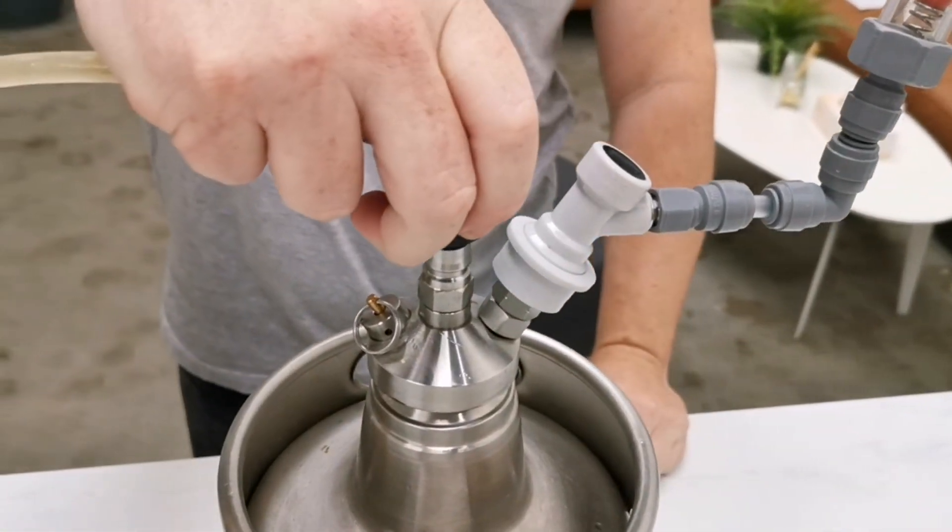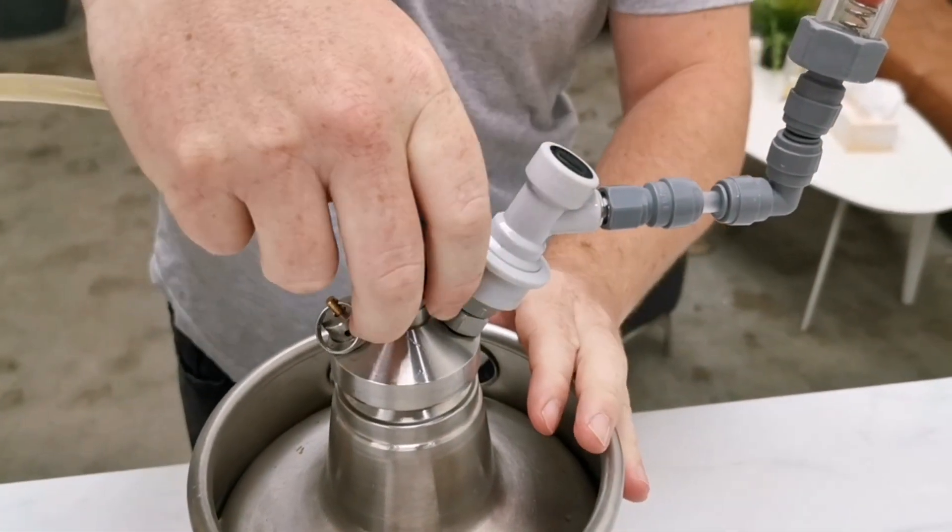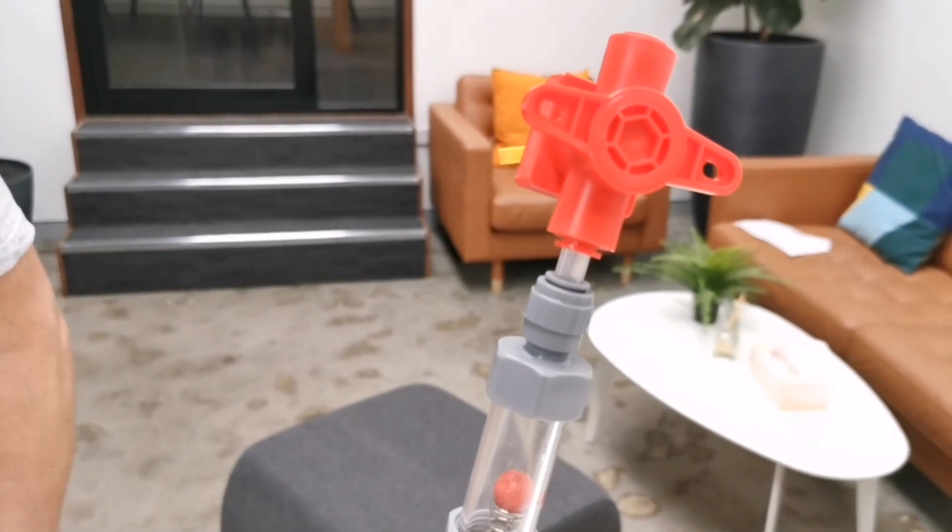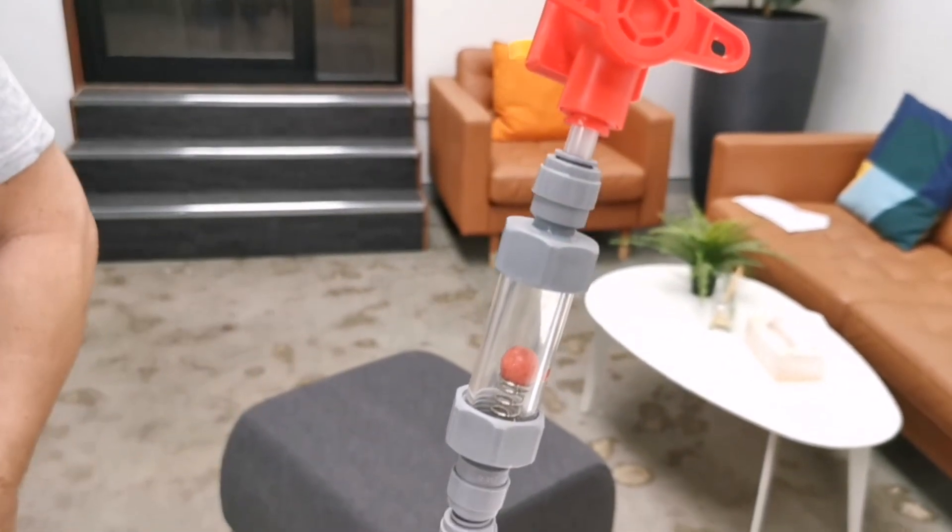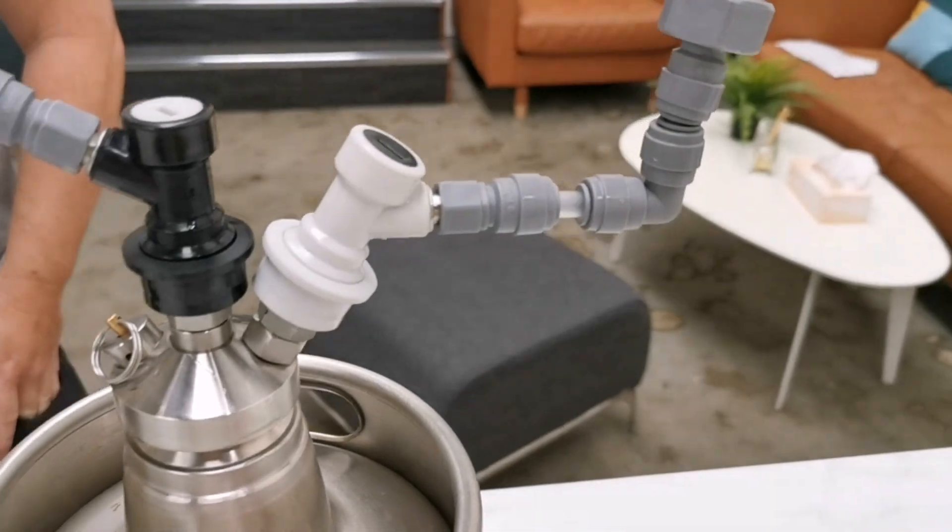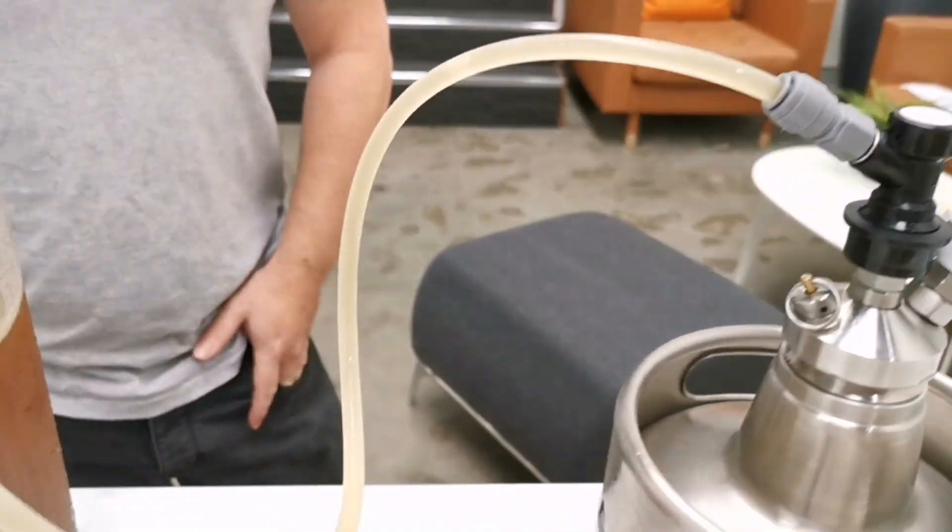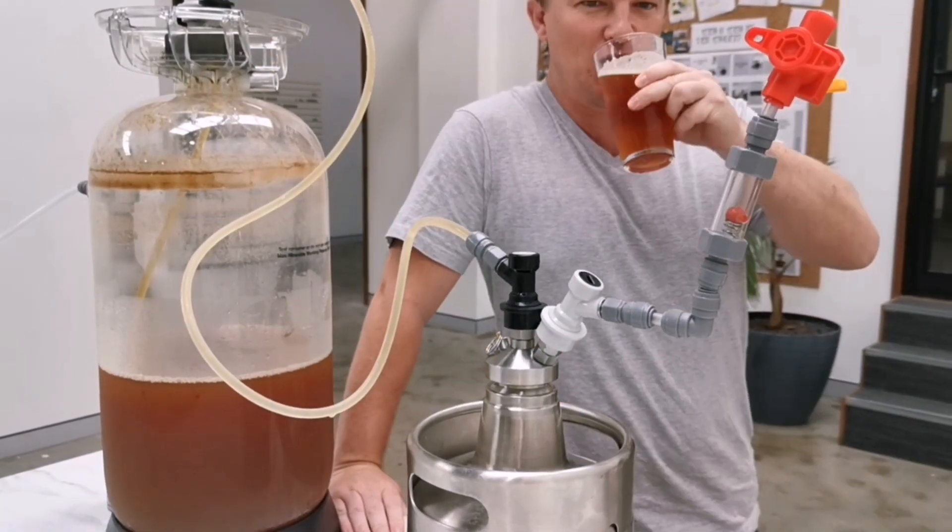Once that's done, hook up the liquid posts. You should hear gas start to escape from the spunding valve. If not, turn down the release pressure slightly so that it does. It's as simple as that.